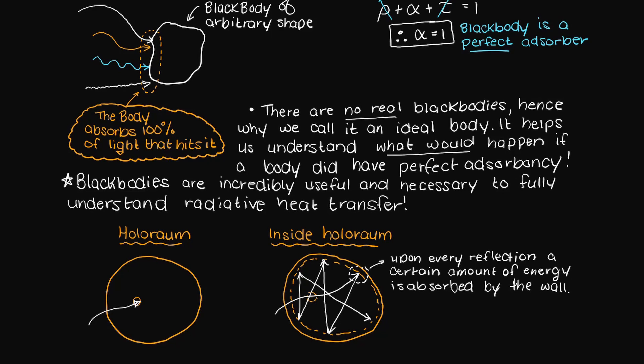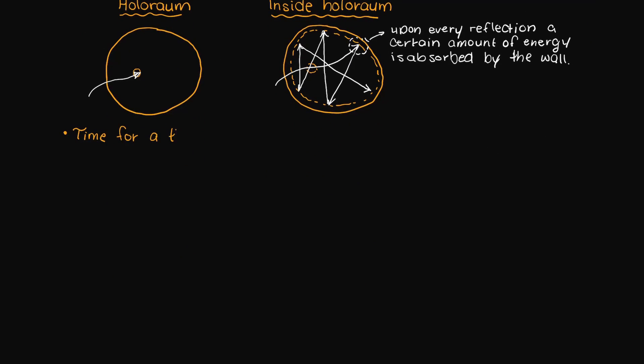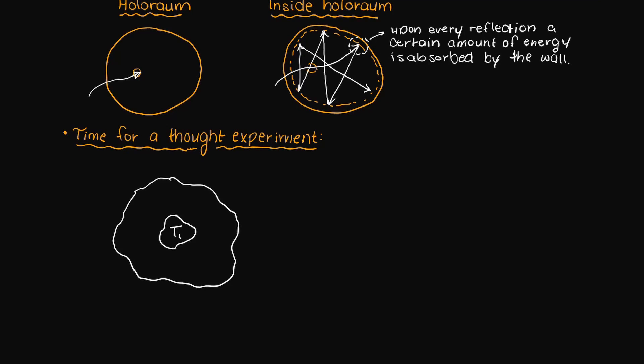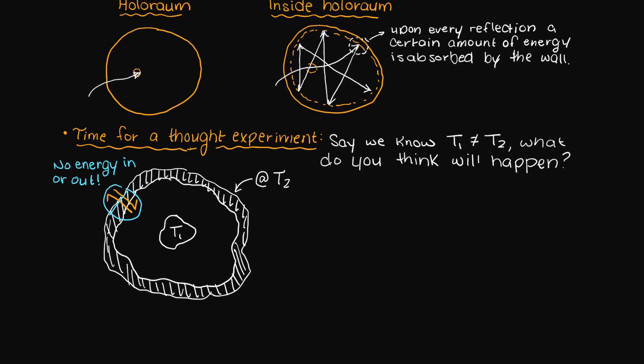Okay, so now that we have a better understanding of what a blackbody is, let's do a thought experiment. Let's say that we have one small blackbody at temperature T1 enclosed in a second blackbody at temperature T2. The shape of the two bodies doesn't matter either as no energy can escape the system as both bodies perfectly absorb all incident radiation. Say we know that T1 and T2 are not equal at time zero. What do you think will happen over time?